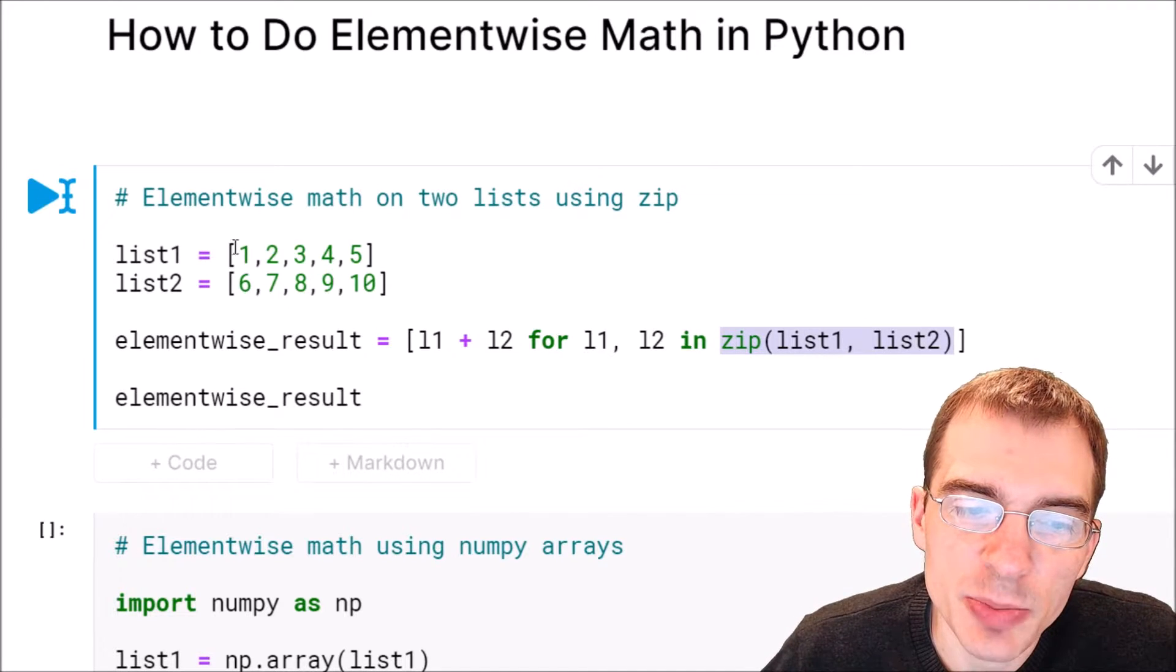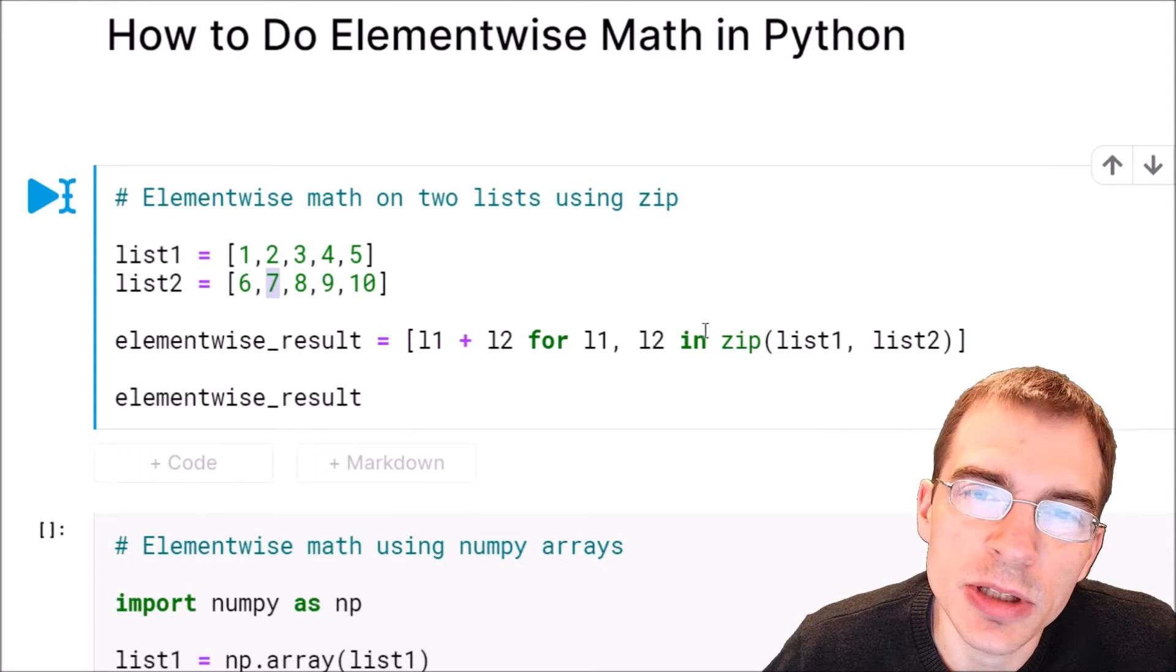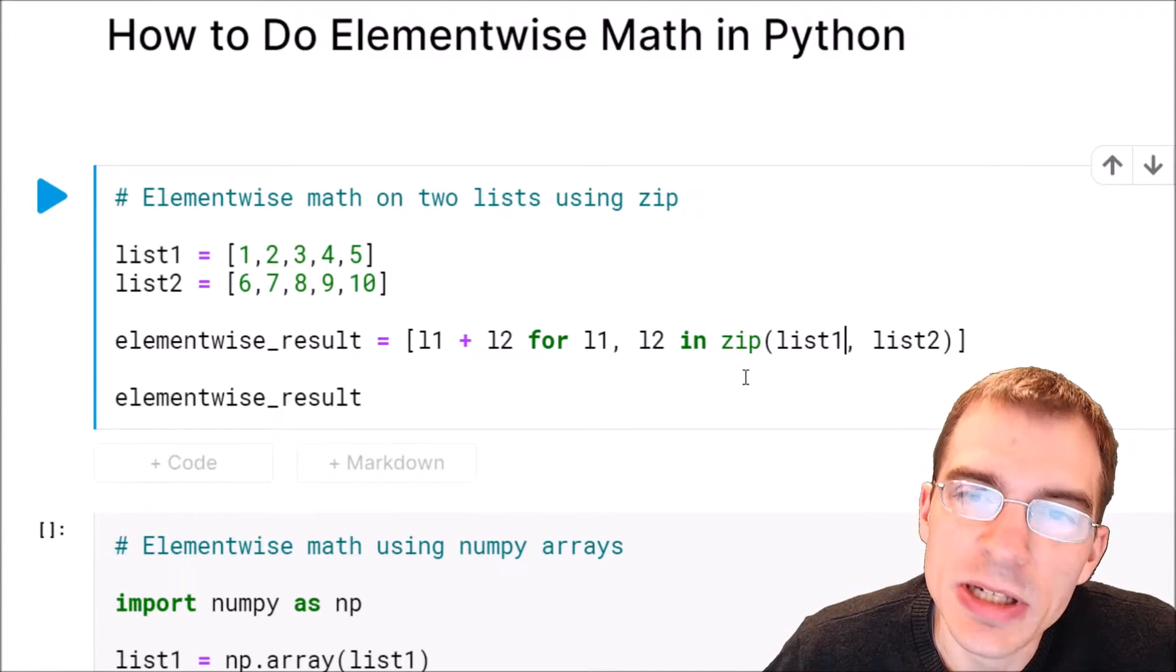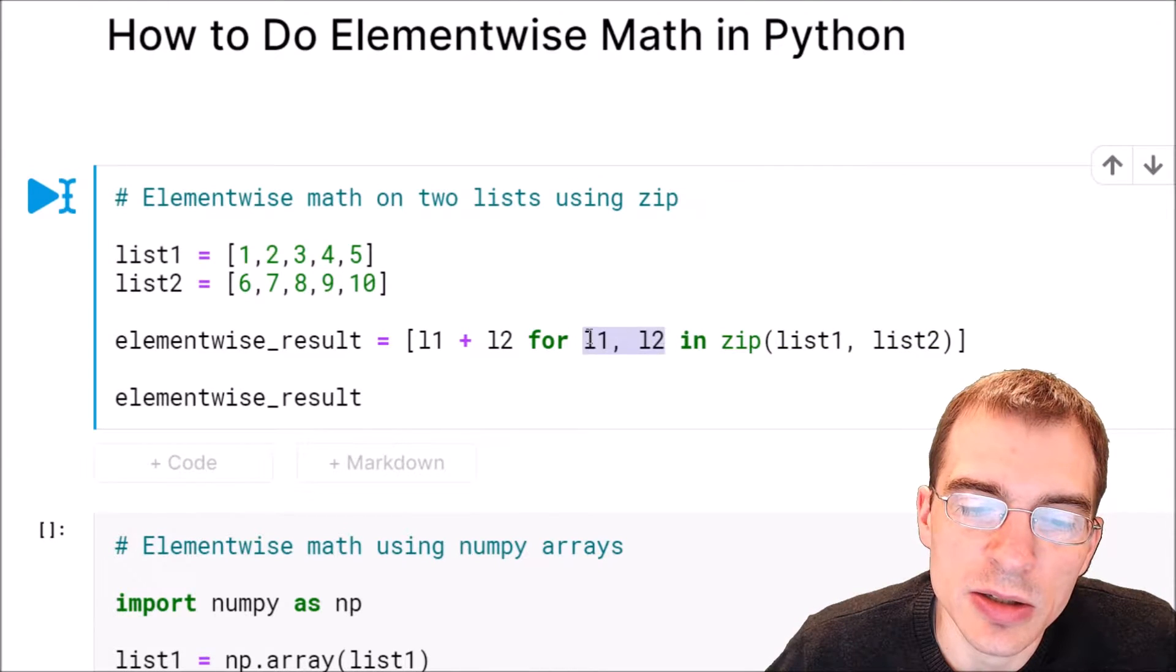What zip does is match up each element—1, 6, 2, 7, etc.—and put them into a tuple. Then we can extract those in this list comprehension to perform the math. Basically, what we're doing here is matching up each of the elements, and then for each of those two things, we're adding them together. So L1 plus L2 for each of those matched up things.